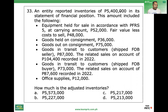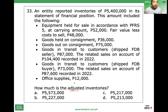Okay class, let's continue. This time, the non-financial assets. Number 33: Inventories. An entity reported inventories of $5,400,000 in its statement of financial position. This amount included the following — let's see if each item is included properly. Requirement: adjusted inventories.